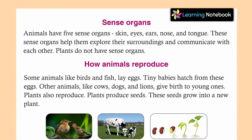Next is sense organs. Animals have five sense organs: skin, eyes, ears, nose and tongue. जो animals होते हैं, उन में हमारी तरह ही five sense organs होते हैं. These sense organs help them explore their surroundings and communicate with each other. और इन sense organs की वजह से वो surroundings को explore कर पाते हैं, feel कर पाते हैं, समझ पाते हैं. But plants do not have sense organs.